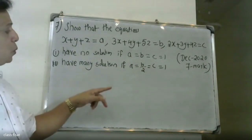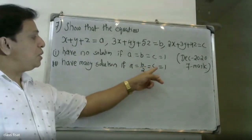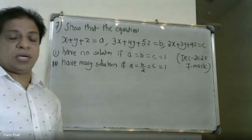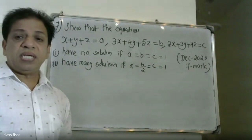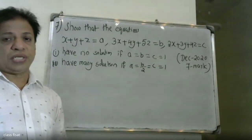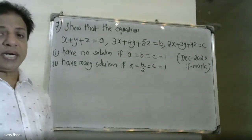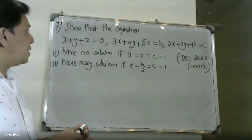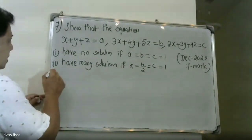How many solutions if a equals b equals c equals 1? This is December 23rd, 7th question. We are going to do it.